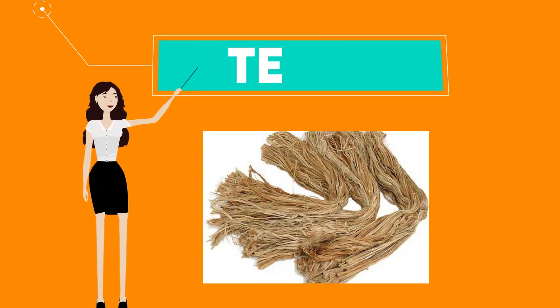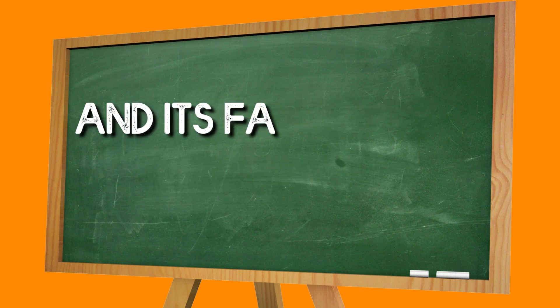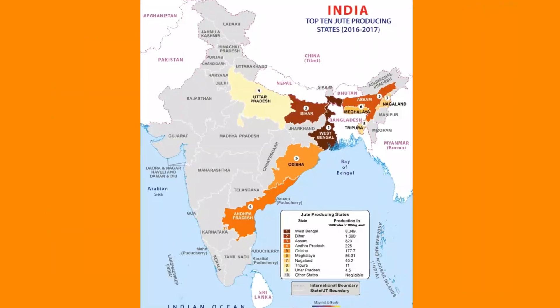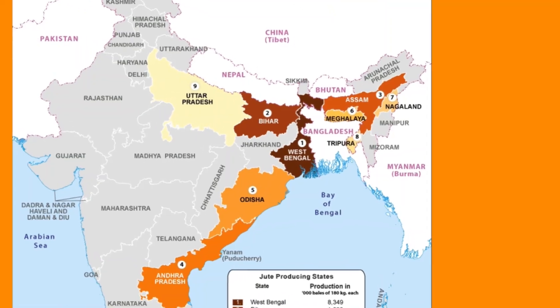Number 6 is Jute. As we all know, jute is called the golden fiber and is famous for its high strength. It mainly grows in West Bengal and Bihar.